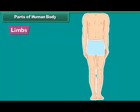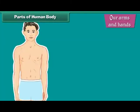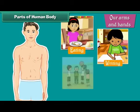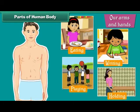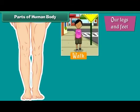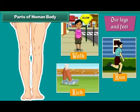Limbs consist of a pair of arms, hands, legs and feet. Our arms and hands assist us in eating, writing, playing, holding and lifting things. Our legs and feet help us to walk, run, kick and dance.